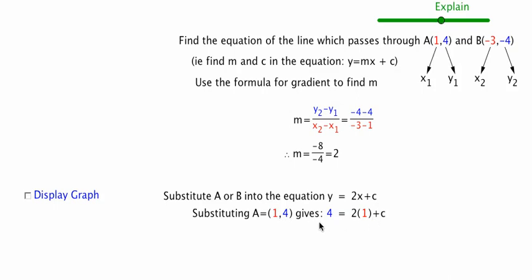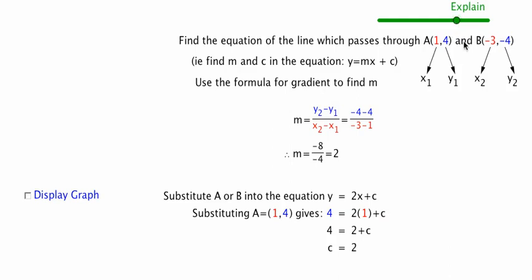If we substitute the y value and the x value of point A into the equation and multiply out, we'll get 2 on the right. Solving for c gives us c equals 2.